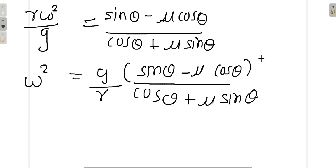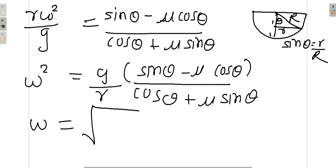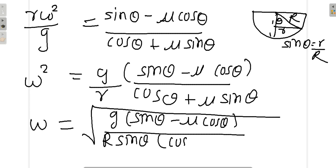Let us write smaller r in terms of capital R. Please recall the figure. This was small r, this was capital R plus theta, and this is capital R. So that sin theta will be, so instead of small r, all you have to do is to put capital R sin theta. And that gives you omega equal to square root of g times sin theta minus mu cos theta over capital R sin theta times cos theta plus mu sin theta. And that is your final answer.